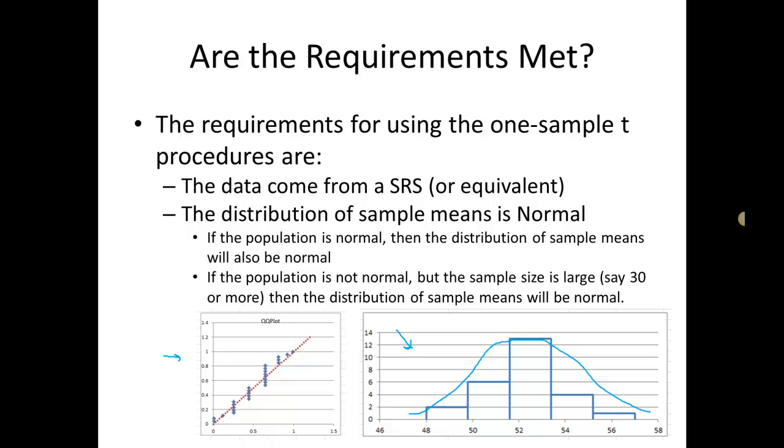If the population was not normal, so if I did a histogram or a QQ plot and it showed like a really skewed distribution or something like that, then I can still say that the requirements are met if the sample size is at least 30 or more. In this case I only had a sample size of 26 but I'm okay because my sample was normally distributed.